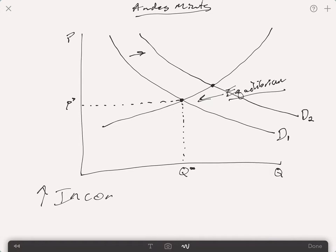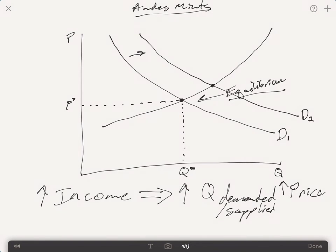That results in an increase in quantity demanded and an increase in price. An increase in quantity demanded and supplied and an increase in the price at that point.